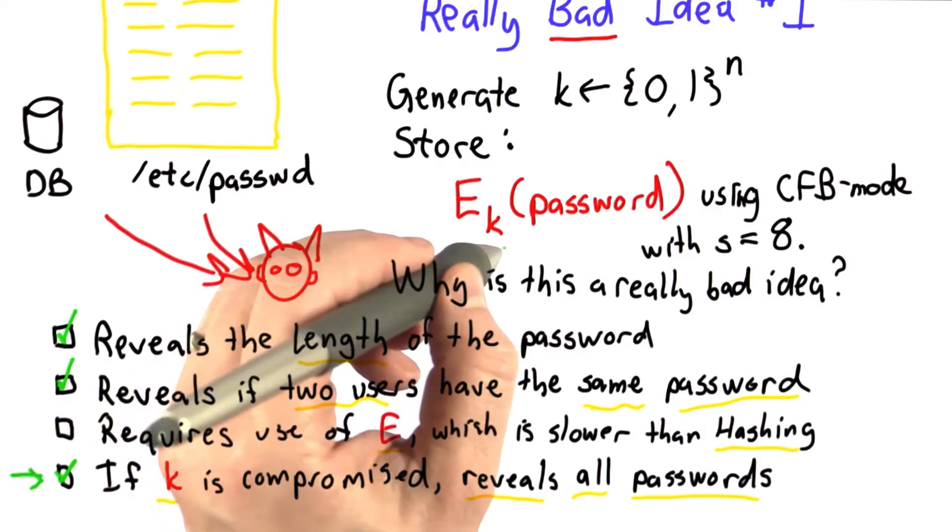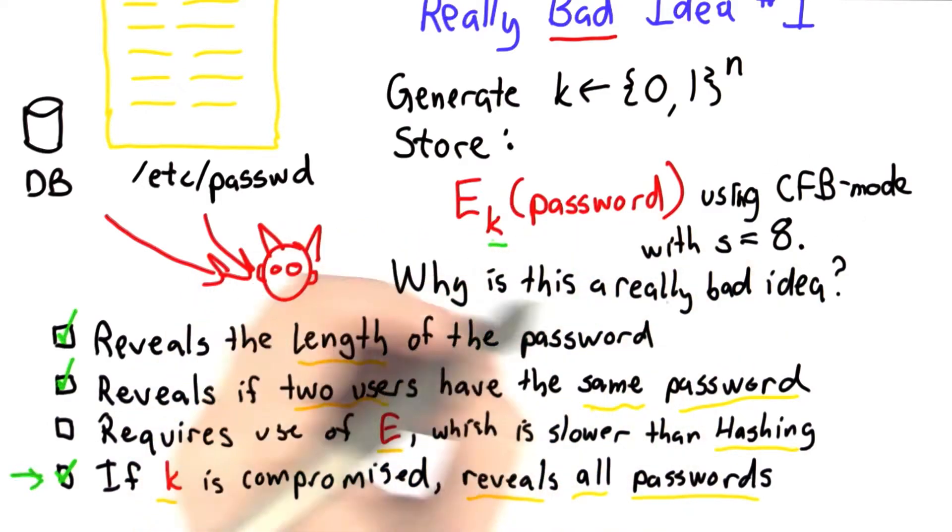Let's talk about the fourth one first. We need this key to decrypt. The program that's running on the server that needs to check passwords will need this key all the time.